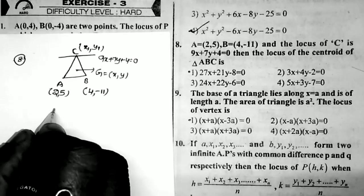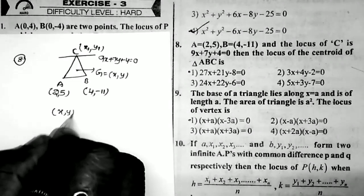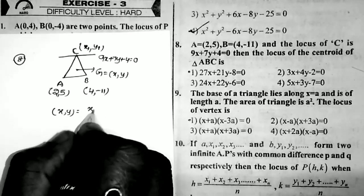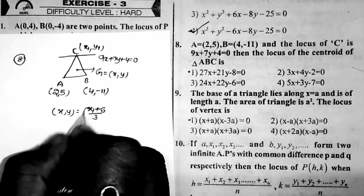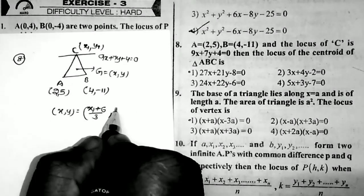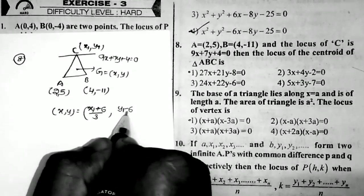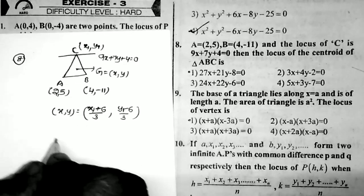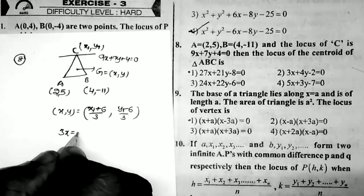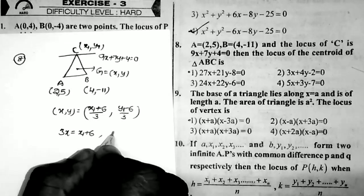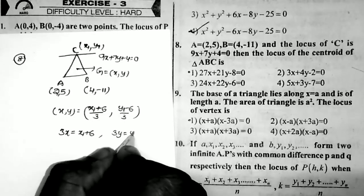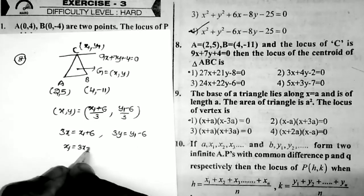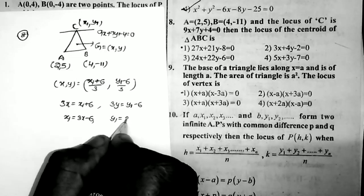The formula for the centroid G(x, y) is: x = (x₁ + x₂ + x₃)/3 = (x₁ + 6)/3, and y = (y₁ + y₂ + y₃)/3 = (y₁ - 6)/3. Equating corresponding values: 3x = x₁ + 6 and 3y = y₁ - 6. From this, x₁ = 3x - 6 and y₁ = 3y + 6.